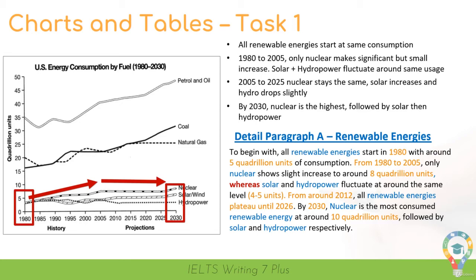We'll be looking at specific vocabulary in more detail later. Taking a look at this paragraph: in blue I have my grouping types, in orange I have key features, and there's one red word — 'whereas' — a great piece of vocabulary to compare different things. At its heart, for charts and tables, we describe the facts and figures from the visual information. This is slightly different for maps and process diagrams, so let's move on.